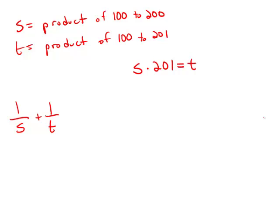So s times 201 equals t, another way to say this is s equals t divided by 201, simply dividing both sides by 201. Well that's useful.